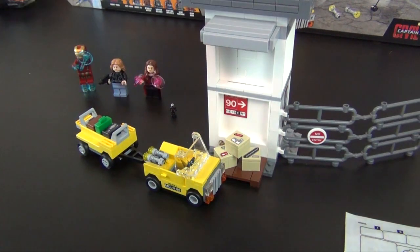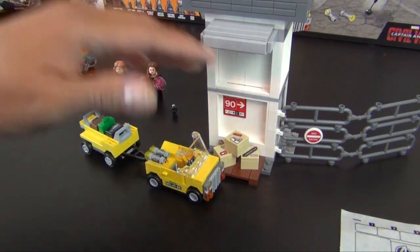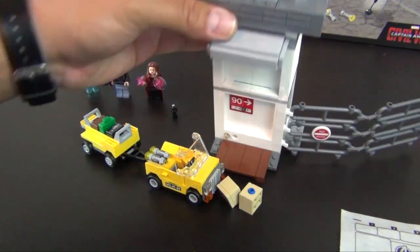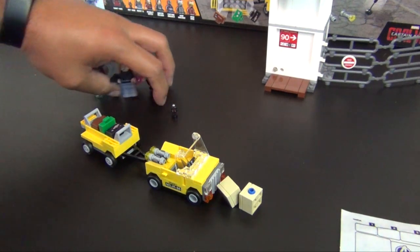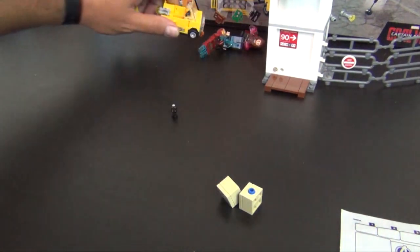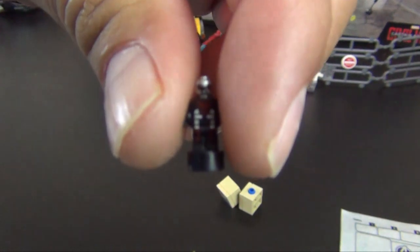So this is how far we made it in part one. We have the tower built, it's all there. We have three minifigures, the airport thing, and we also have the micro Ant-Man.